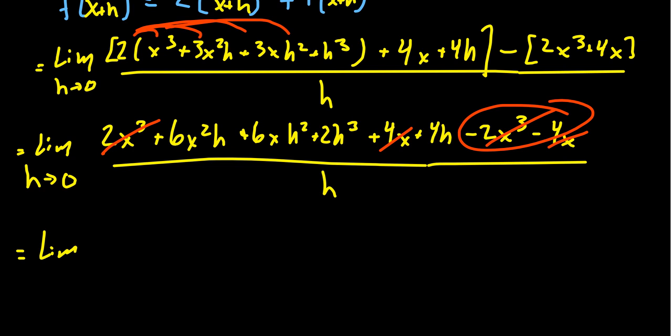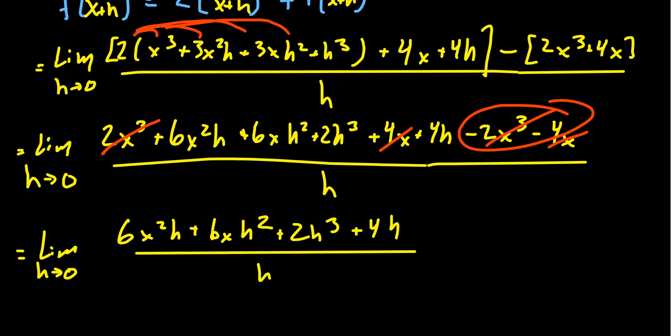So everyone in the f(x) faction canceled with something in the f(x+h) faction. So now let's write down who survived that massacre. We get 6x²h + 6xh² + 2h³ + 4h all over h.